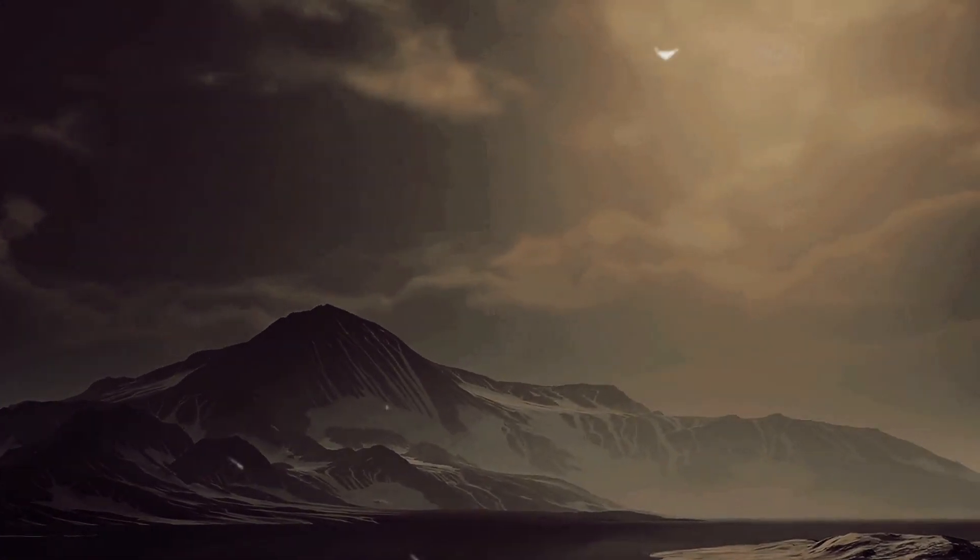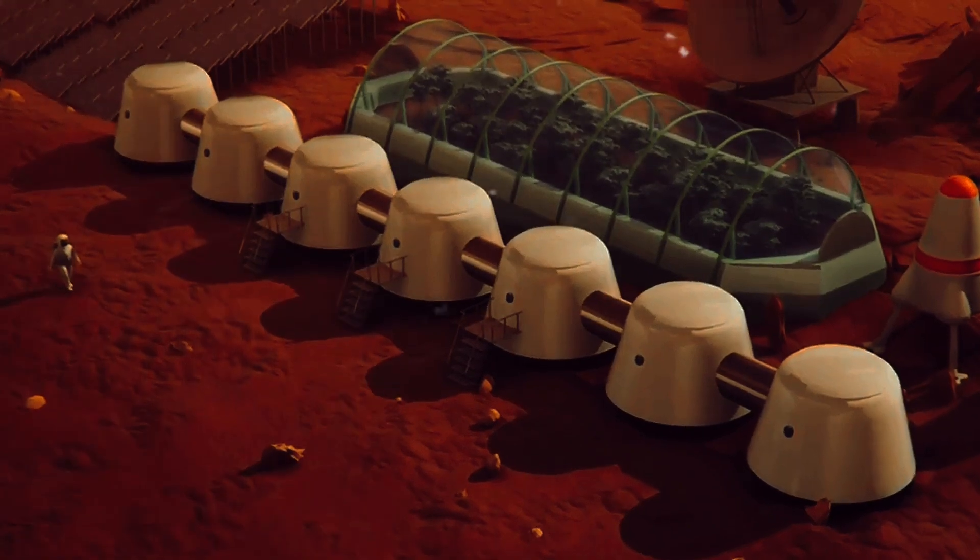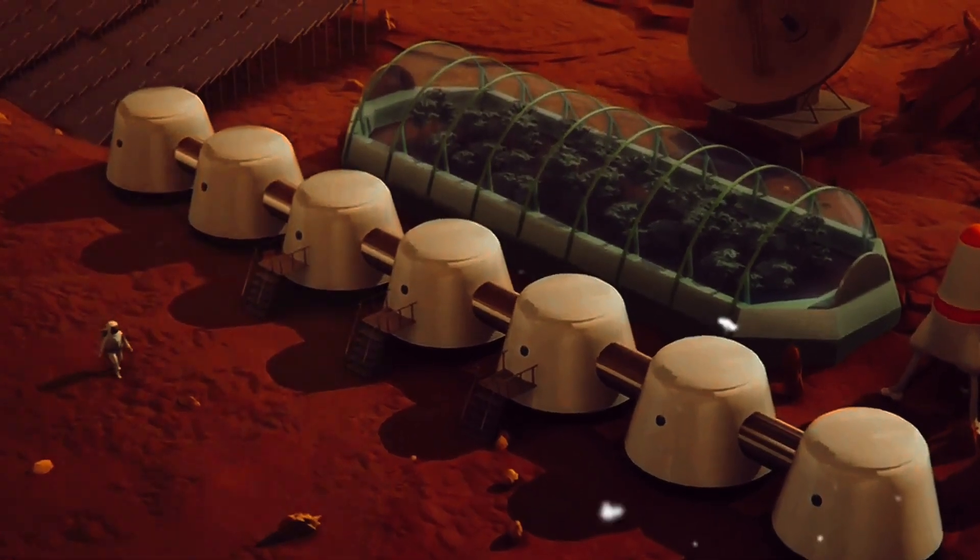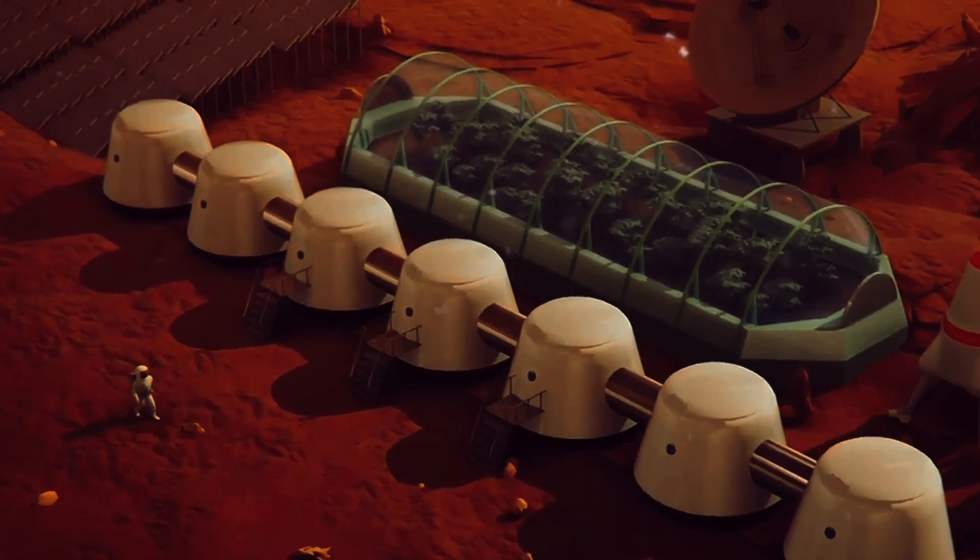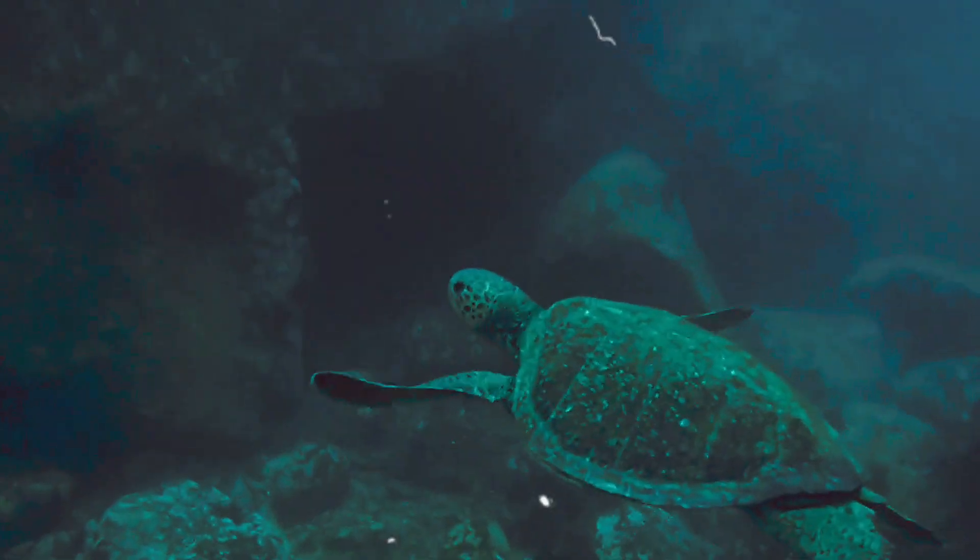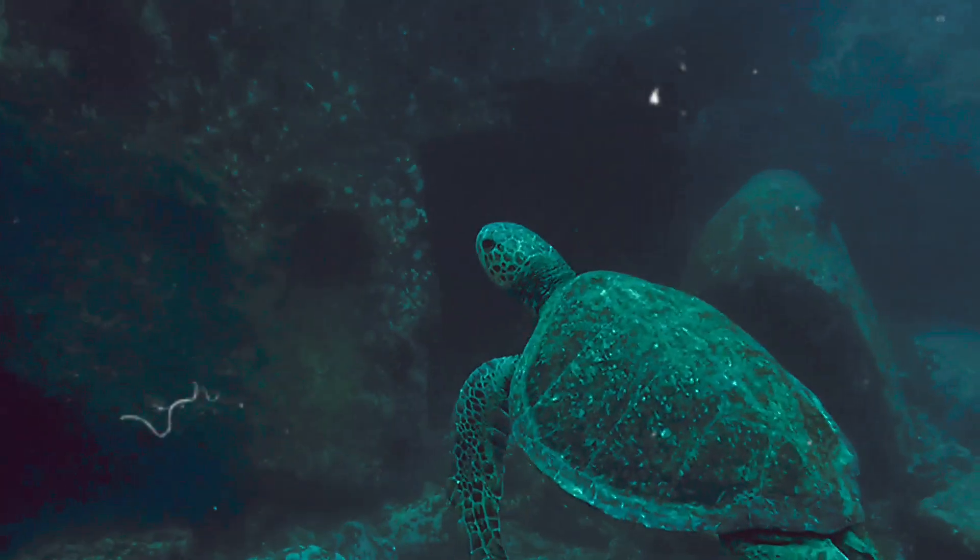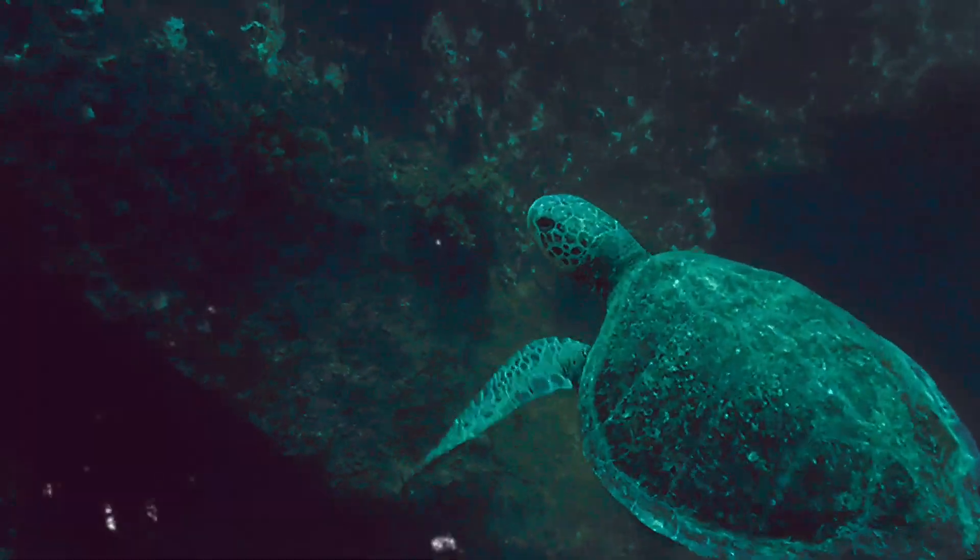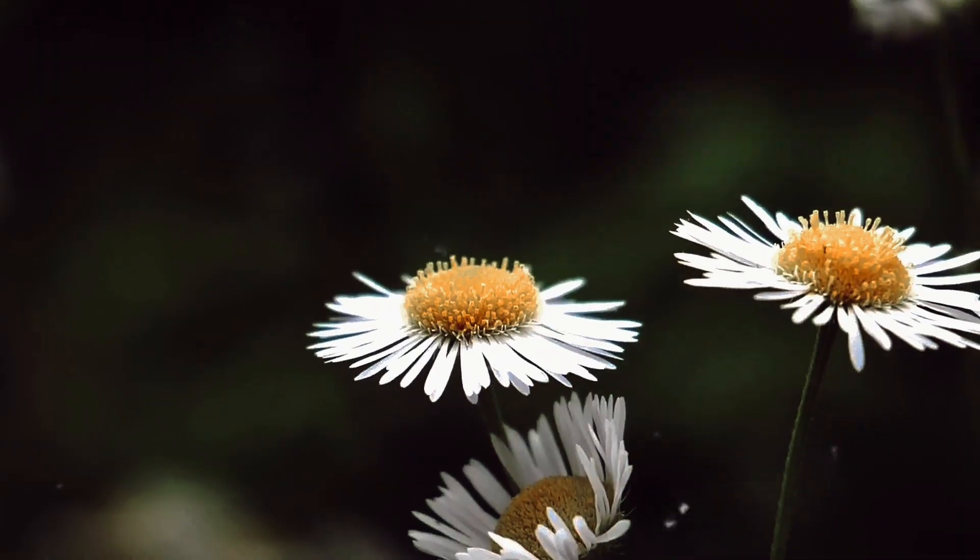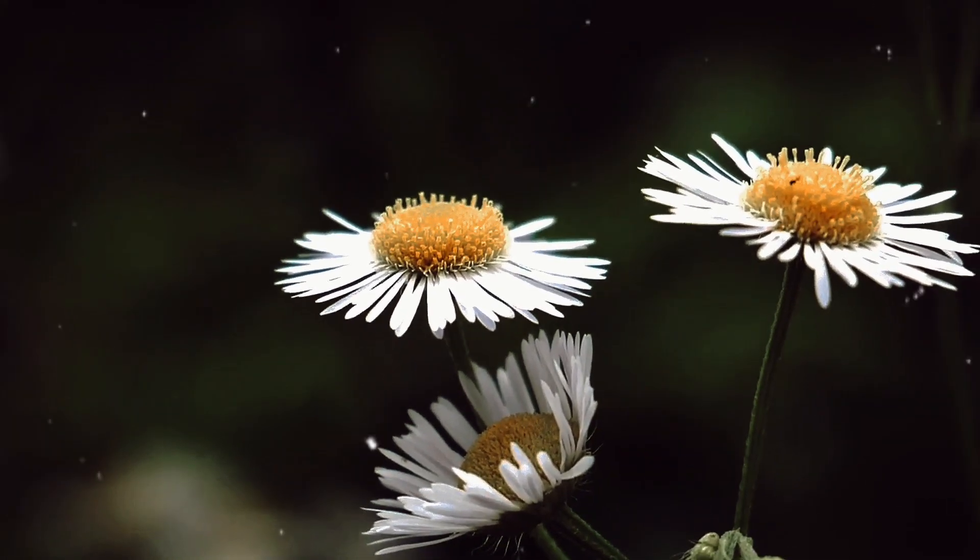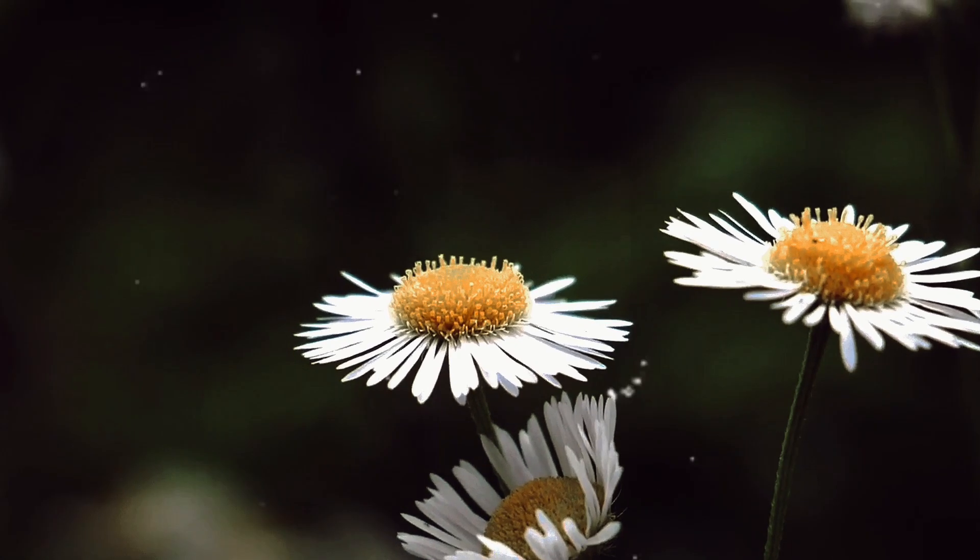But what about the biosphere, the global sum of all ecosystems? Well, most life on Earth is adapted to survive within a certain range of temperatures. A sudden drop to Martian levels could cause a mass extinction event. Many species would not be able to adapt fast enough to these harsh new conditions and would sadly perish.